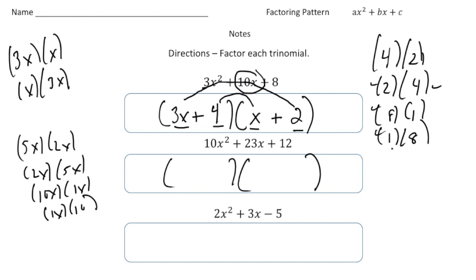And then 12, it could be 12 times 1. It could be 1 times 12. It could be 6 and 2. It could be 2 and 6. It could be 4 and 3. It could also be 3 and 4. So we have a lot of combinations to plug in.